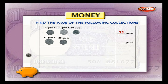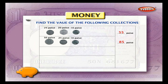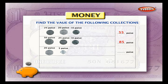1 fifty paisa coin plus 1 twenty-five paisa coin plus 1 ten paisa coin: 50 plus 25 plus 10 is equal to 85 paisa. 1 twenty paisa plus 1 five paisa is equal to 20 plus 5, which is equal to 25 paisa.